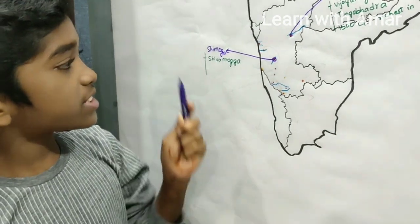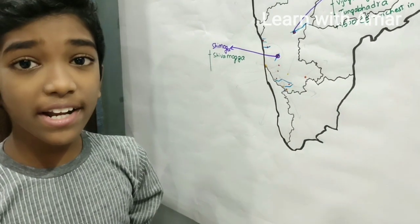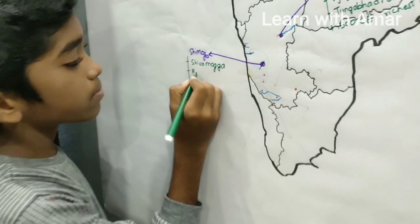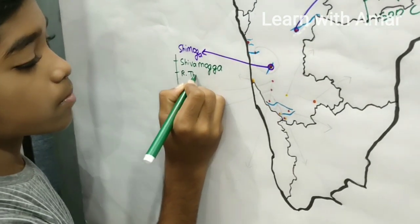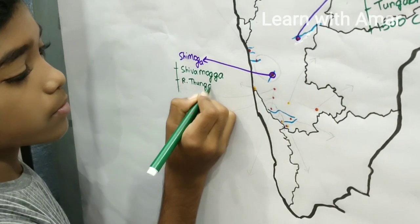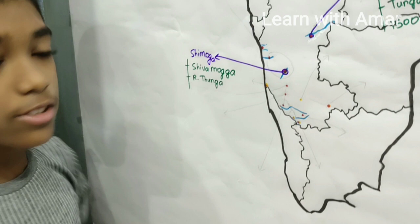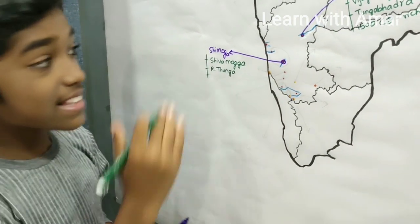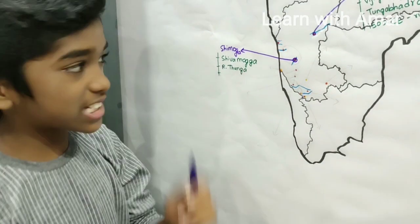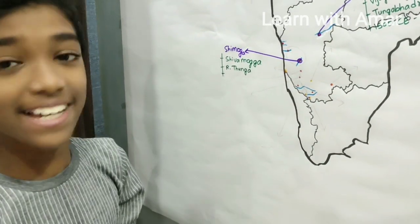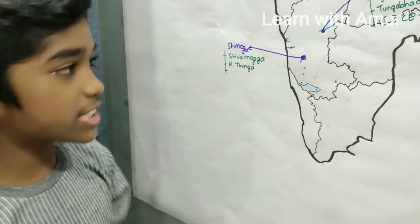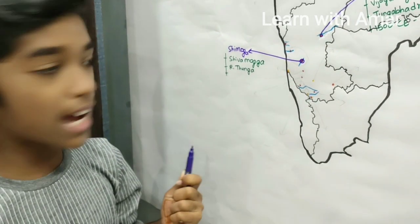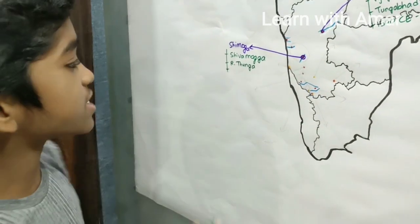Shivamoga is situated on the banks of river Tungabhadra. And in this Shimoga district, the Jog Falls are situated — a popular tourist destination of South India.